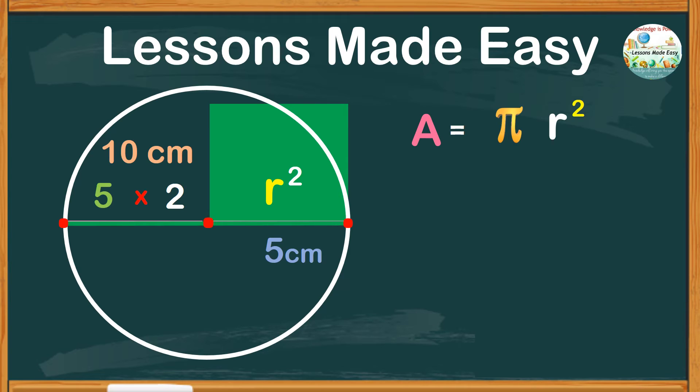On the other hand, r squared means you square the radius by multiplying the value by itself. So if the radius is 5 centimeters times 5 centimeters, we get 25 square centimeters. You see, the answers are totally different. So let's try solving the area of this circle in detail.